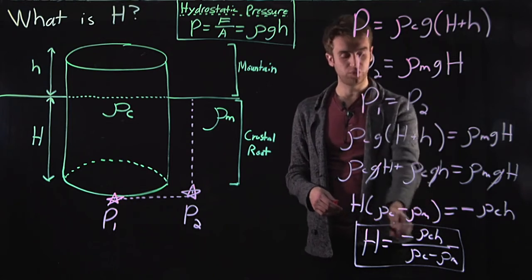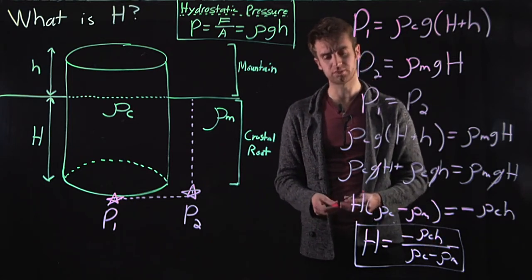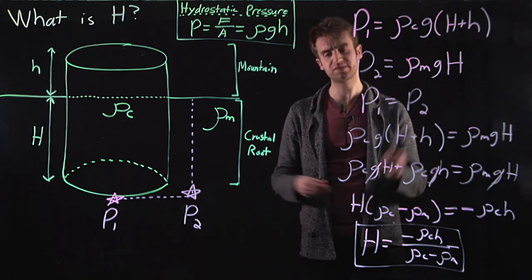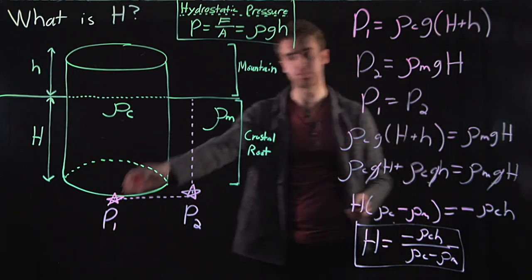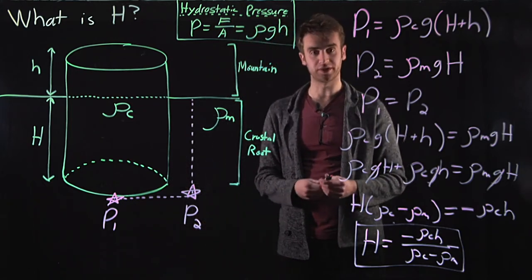So if you were to plug in these known values into this formula, you would get something like, you know, 27 kilometers in depth, which is approximately the depth of the crustal root of the Himalayas.